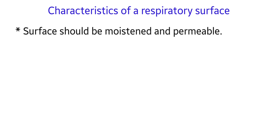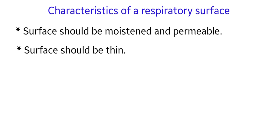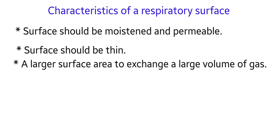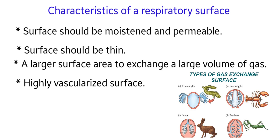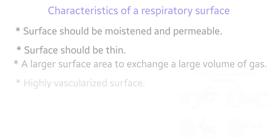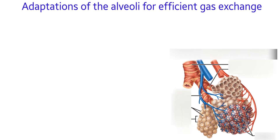The characteristics of a respiratory surface include: it should be moistened and permeable for gas exchange; it should be thin for diffusion of gases; it should have a large surface area to exchange a large volume of gas according to the needs of animals; and the surface must be highly vascularized. Animals have different respiratory surfaces such as gills, the whole body surface, or trachea.